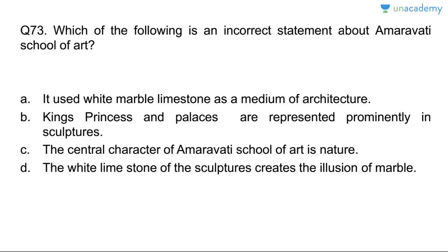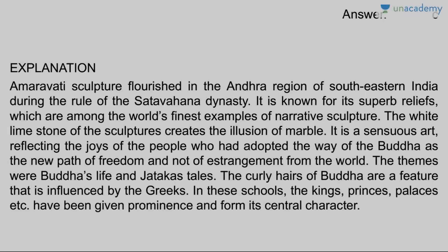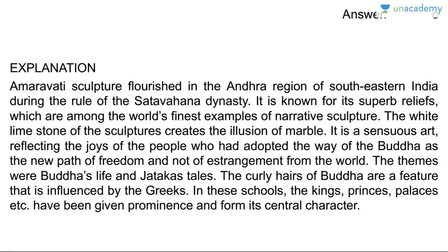Question seventy-three: which statement is incorrect about the Amaravati School of Art? It used white marble limestone as a medium — correct. Kings, princes, and palaces are prominently represented — correct. The central character of Amaravati school of art is nature — wrong; the themes were Buddha's life and Jataka tales. The white limestone creates an illusion of marble — correct. Answer is C. The art is from the Andhra region of southeastern India during the Satavahana dynasty rule.